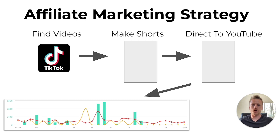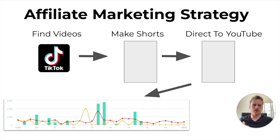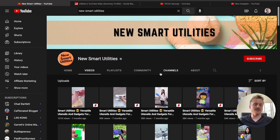We are going to be using affiliate marketing in order to make money with YouTube Shorts. First, we have to find those videos after we get approved for Amazon Associates. The best place to find those videos for affiliate marketing is going to be on the TikTok platform. Then we're going to take those videos and make short videos for YouTube called YouTube Shorts. After that, we're going to direct people from those YouTube Shorts over to the YouTube description in our longer videos in order to make money with Amazon Affiliate Marketing.